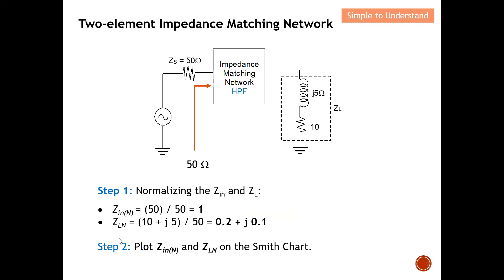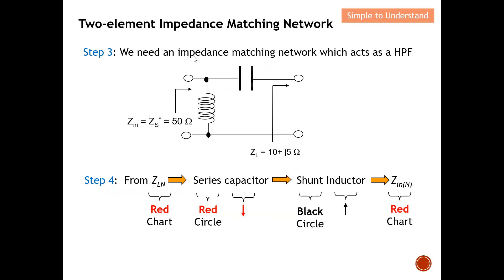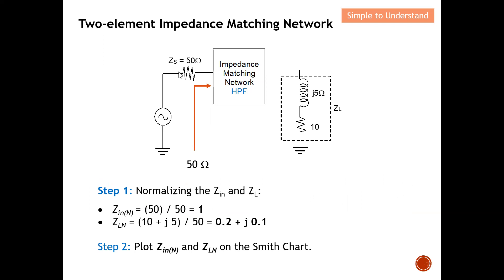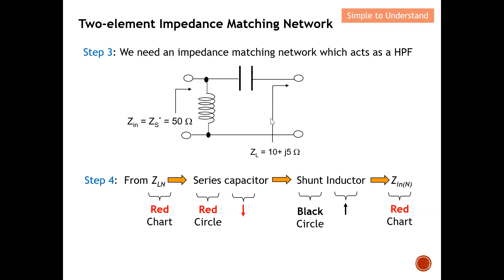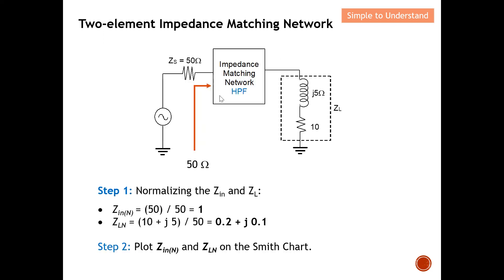The question specifies a high pass filter. For a high pass filter, I need a series C and a shunt L — can you still remember? The direction of the series C depends on the impedance values. Think of it like a gun — it always points toward the smaller value. Here we have 10 and 50, so the smaller is 10, and therefore the series element is facing toward the load. This will be the impedance matching network inserted to achieve Z_in equals 50 ohm.